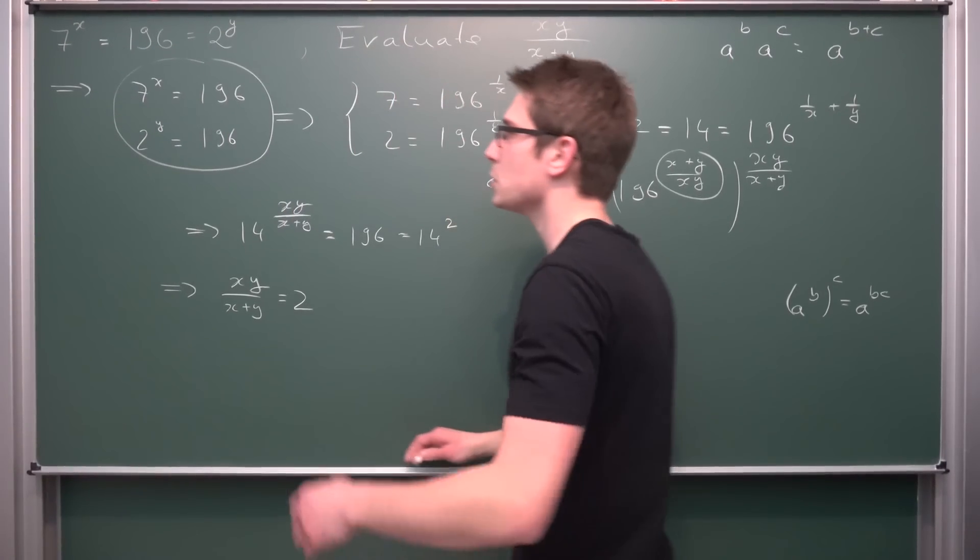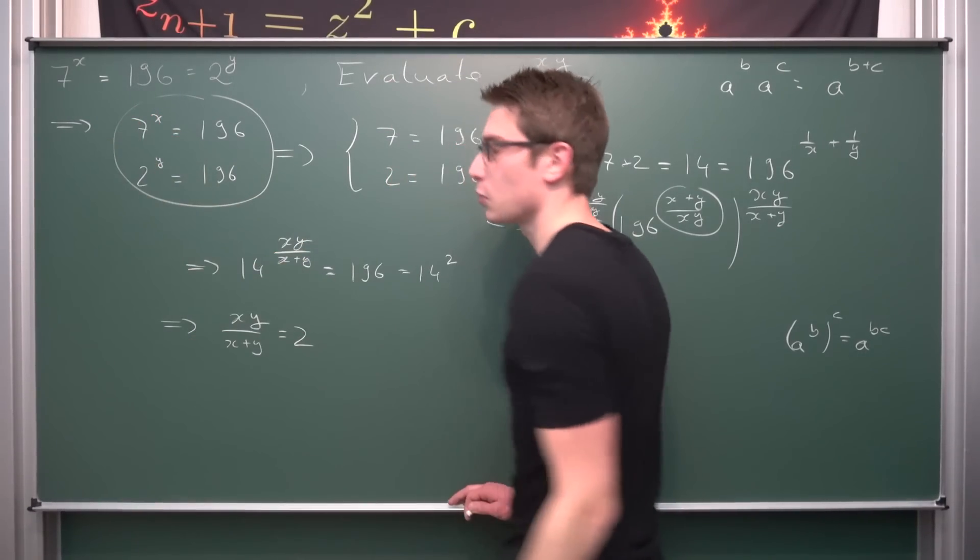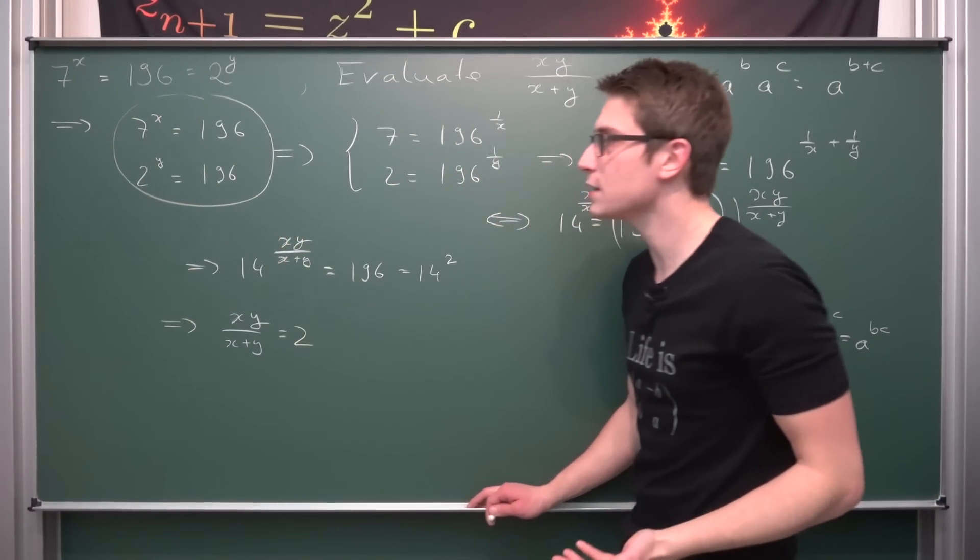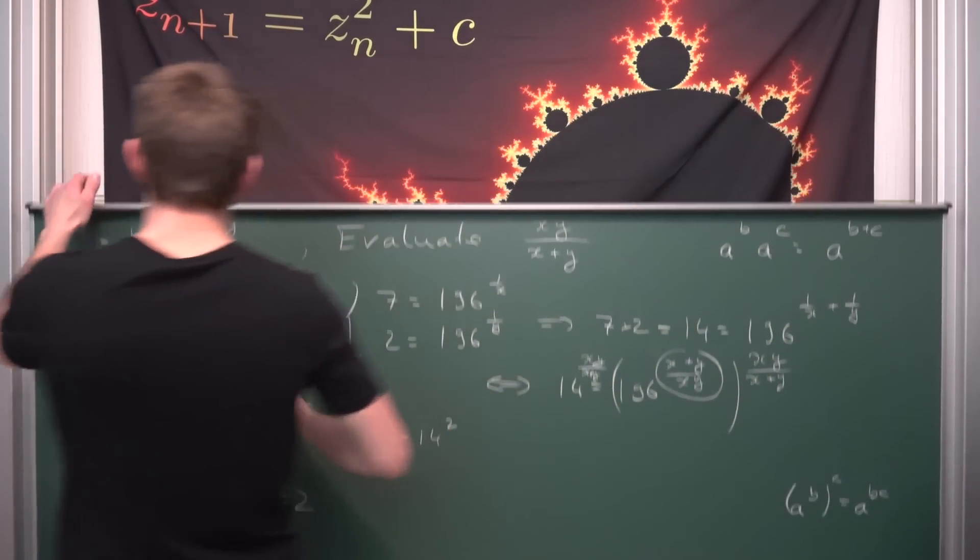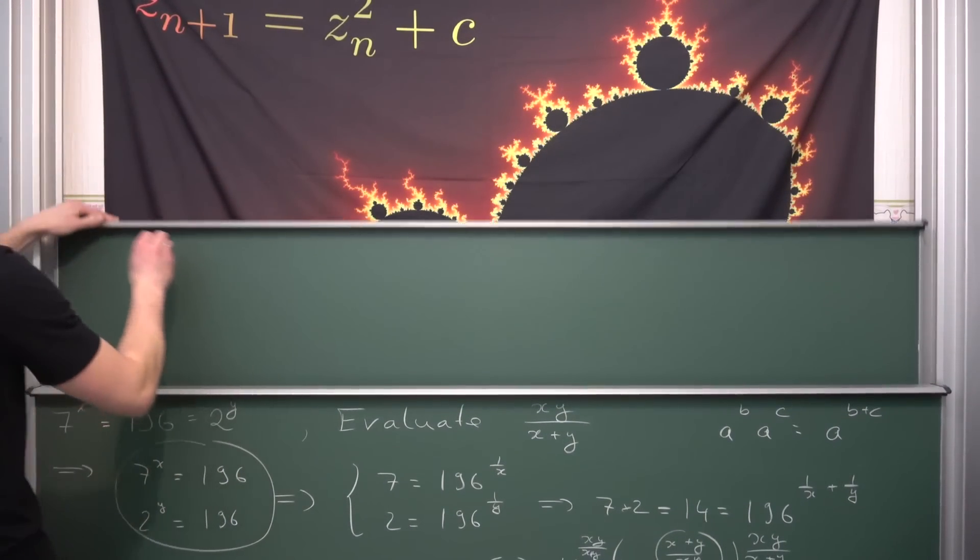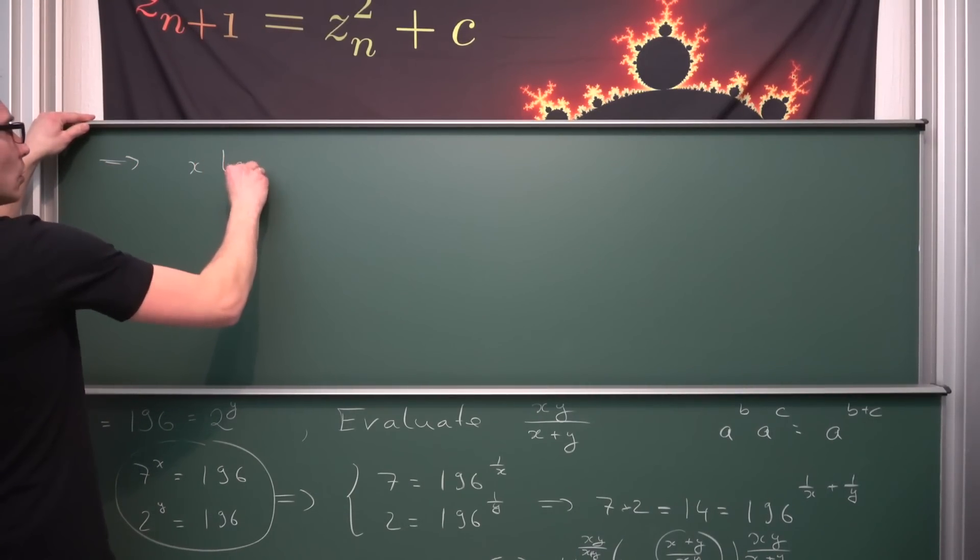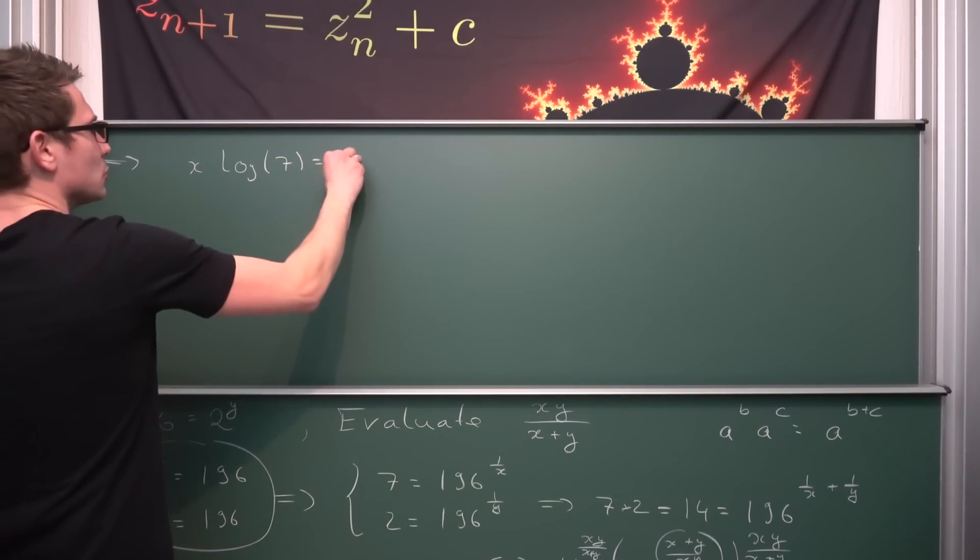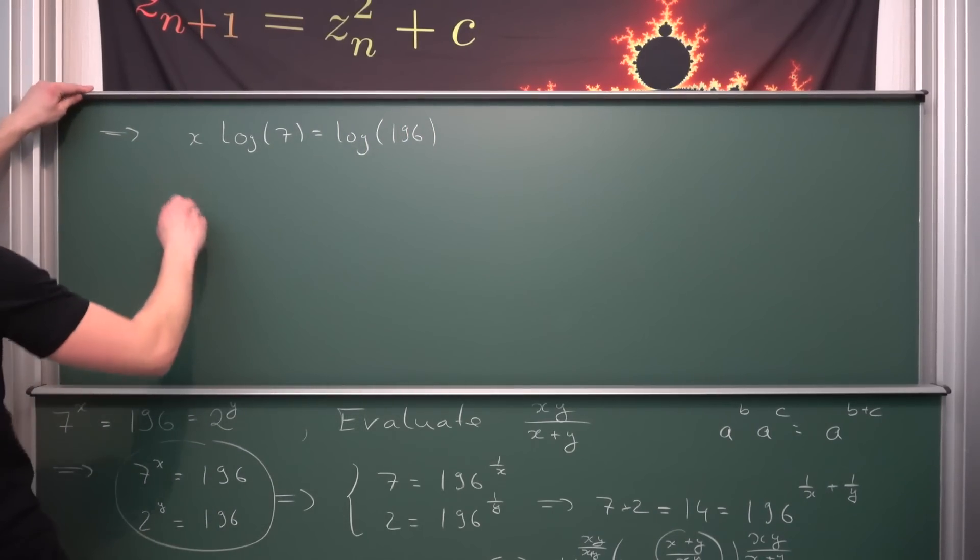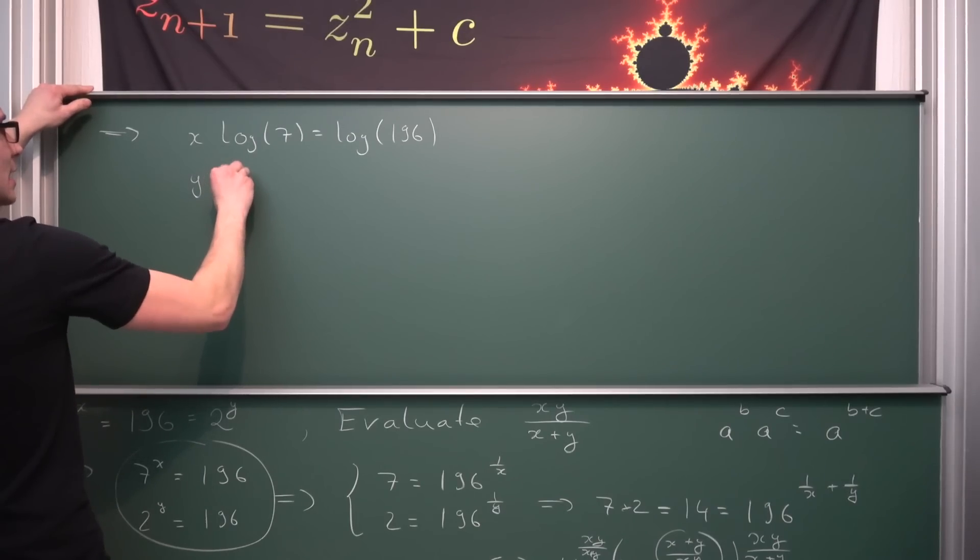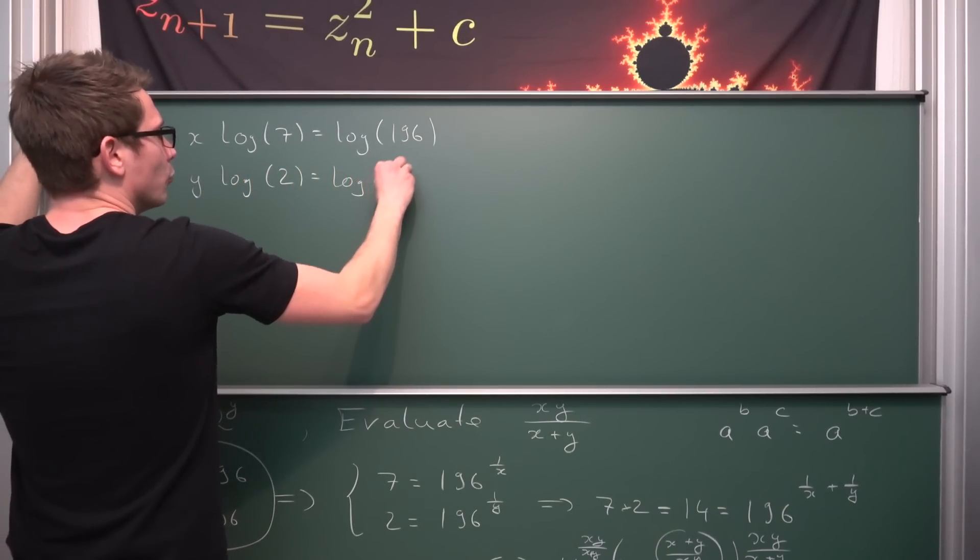If we take a look at these two equations that we got here originally, what we can also do is take log base 7 on both sides and also log base 2 on both sides or what we could rather do is take the natural log on both sides. If we were to take the natural log then 7 to the x power by the logarithm rules is going to turn into x times the natural log of 7 is equal to the natural log of 196. And also for the other equation we are going to get y times the natural log of 2 is equal to the natural log of 196.